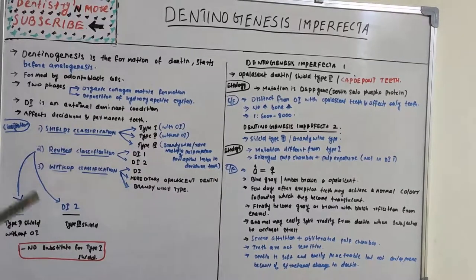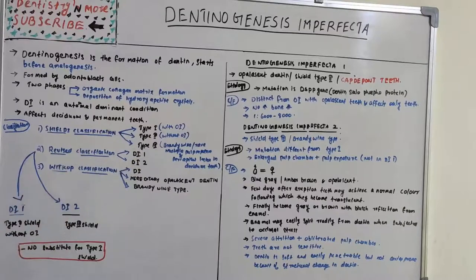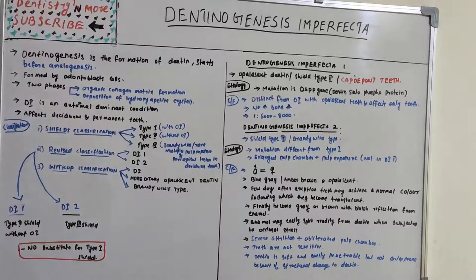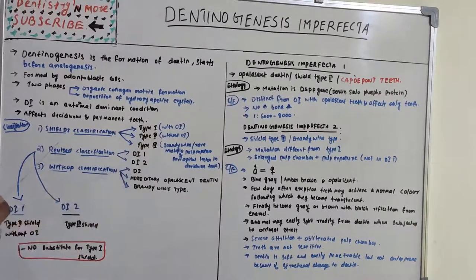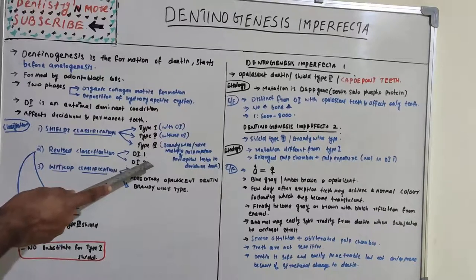In the revised classification, dentinogenesis imperfecta type 1 corresponds to Shields type 2, and dentinogenesis imperfecta type 2 corresponds to Shields type 3. There is no substitute in the revised classification for Shields type 1. So the revised classification has only two types — dentinogenesis imperfecta 1 and 2 — corresponding to Shields types 2 and 3.